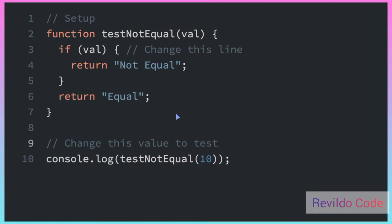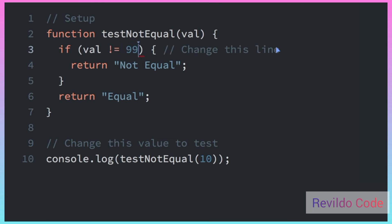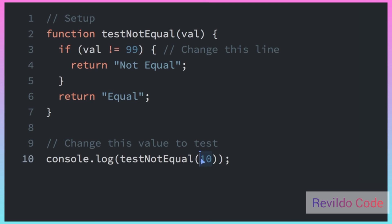Now I will show you the inequality operator, which is basically the opposite of the equality operator. I'm going to use the inequality operator with an exclamation point and an equal sign. In this case, I'm going to see if the value is not equal to 99. Just like the equality operator, this does type conversion. We passed in 10, and 10 is not equal to 99, so we get 'not equal'.